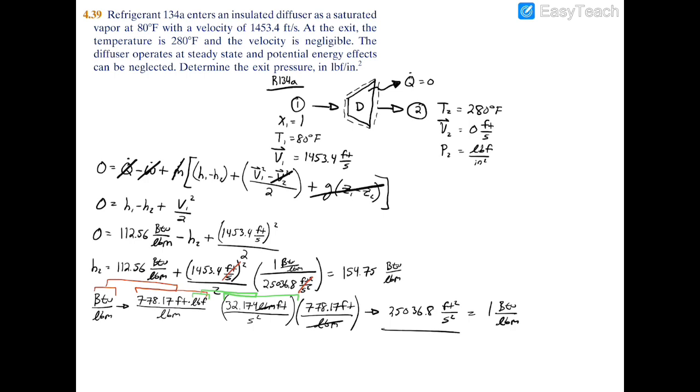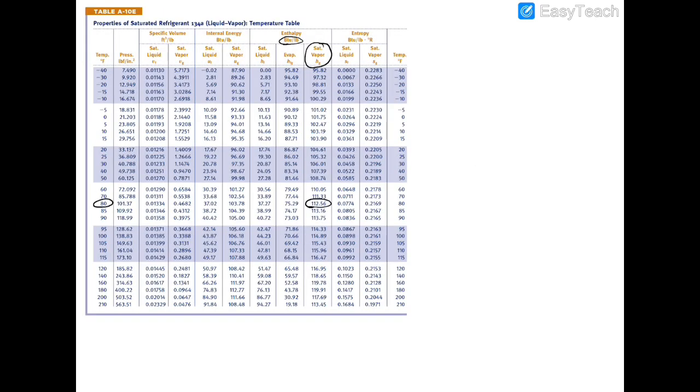Now that I have two pieces of information - the temperature of 280 Fahrenheit and the enthalpy of 154.75 - I now have two properties which I can use to approximate my exit pressure. If we go to our property table and look for 280 degrees, we can see it's not on there.